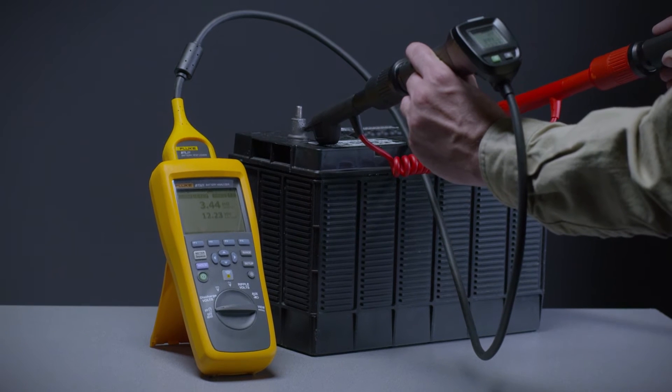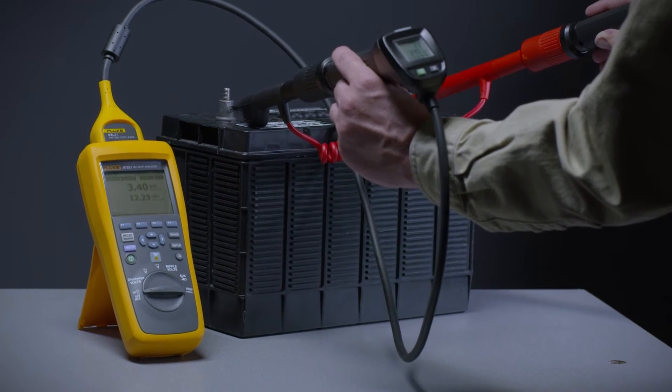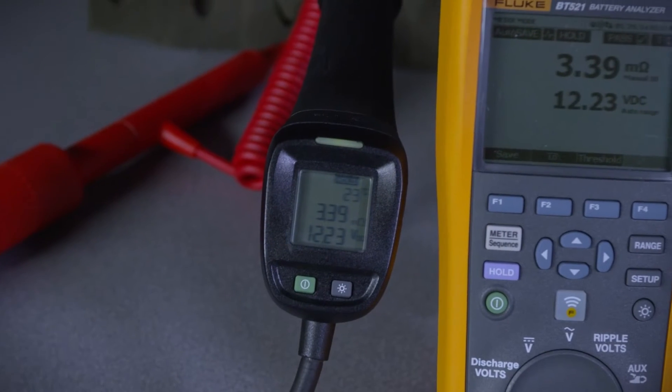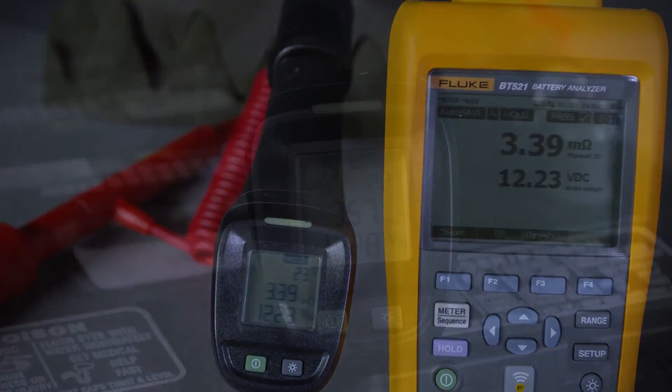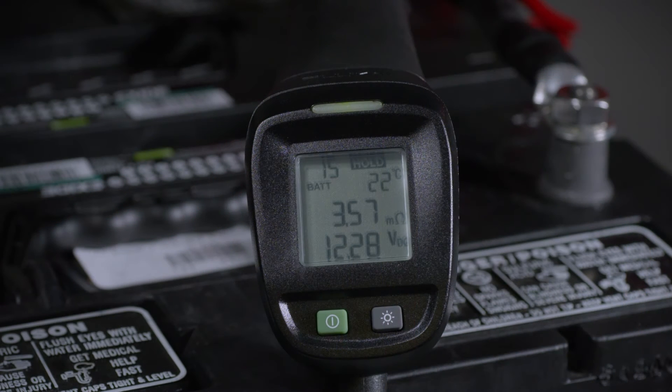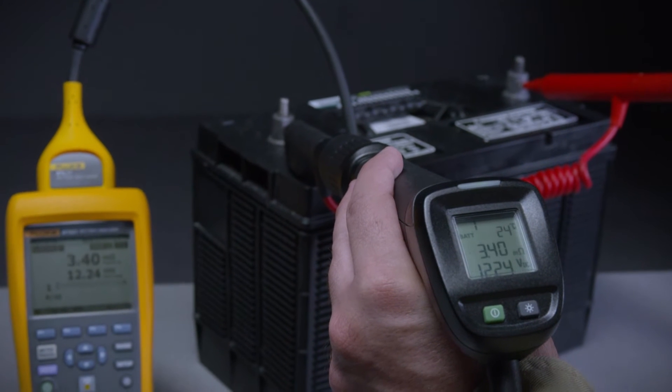One of the most significant improvements with the Fluke battery analyzer is the addition of intelligent test probes. The BTL21 intelligent test probe has the ability to indicate voltage as well as other readings such as milli-ohms and temperature right on the integrated LCD display, eliminating the need to refer to the main unit to verify measurement results.